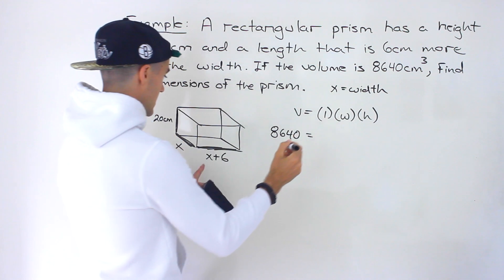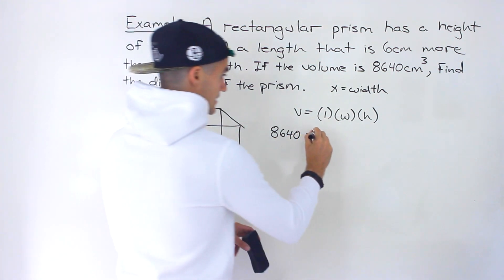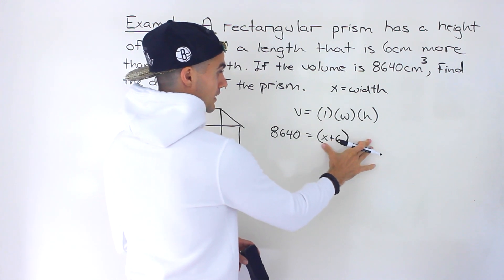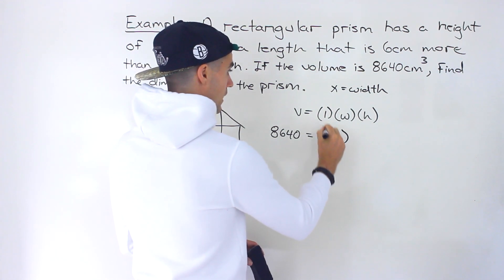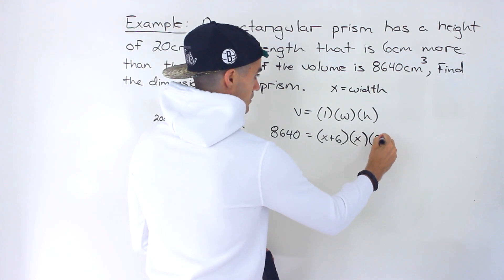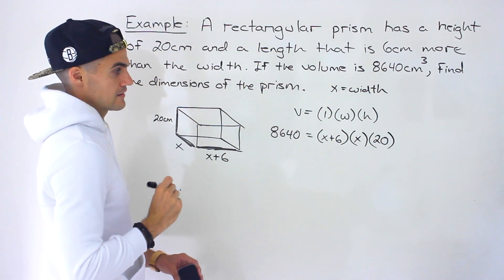So the length is x plus 6. I'm gonna put these in a weird order just to match it up with this and then I'll put it in a nicer order in the next line. So we'll have the length, the width, the height like that.